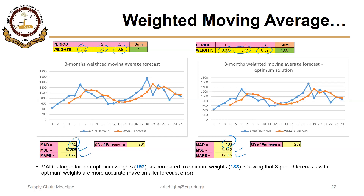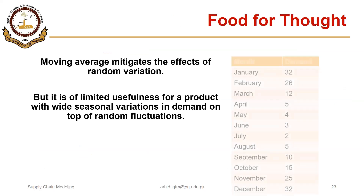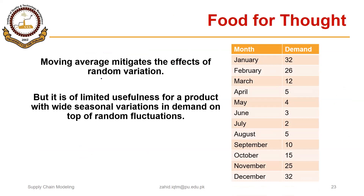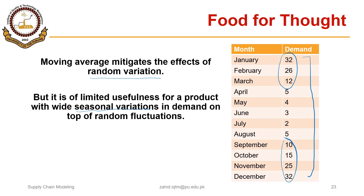We discussed simple moving average in the previous segment and weighted moving average in this segment. One important point: moving average does mitigate the effects of random variation, but it is of limited usefulness for a product with wide seasonal variation. Looking at the data, which appears seasonal — decreasing then increasing, suggesting a winter-season product — it is better to incorporate seasonal indexes. Moving average will give a higher error in such cases, and we will discuss the seasonally adjusted forecasting method in a following segment.